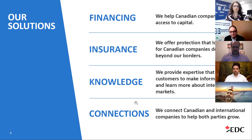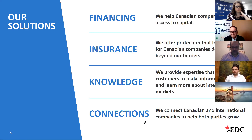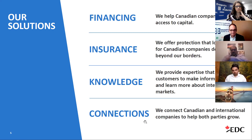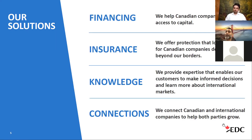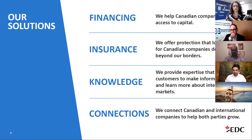EDC can be divided into four buckets. First, financing: EDC primarily works with your commercial bank to help you obtain additional working capital domestically and internationally, and can also help international buyers obtain financing to buy from you. Second, insurance: EDC's credit insurance program is a key component of international contracts and can even be used as a selling tool — giving extended terms to international customers to encourage more purchasing. Third, knowledge: Navi will mention additional resources later in the presentation.